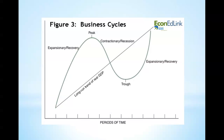The second phase is known as the peak. At the peak of the business cycle, GDP is at its highest point. Third is the contractionary phase, during which real output is falling, unemployment is rising, and inflationary pressures subside.